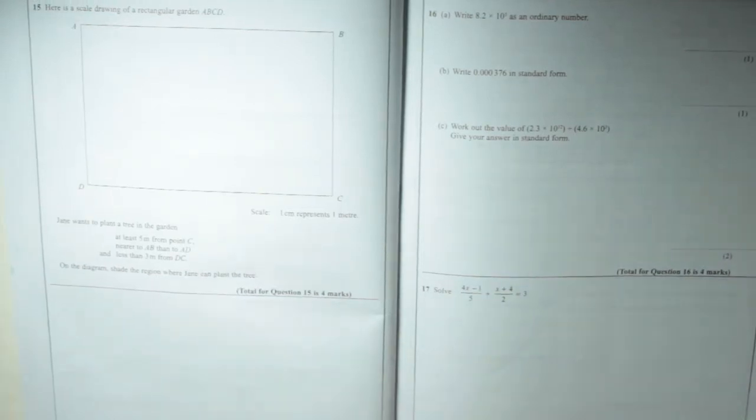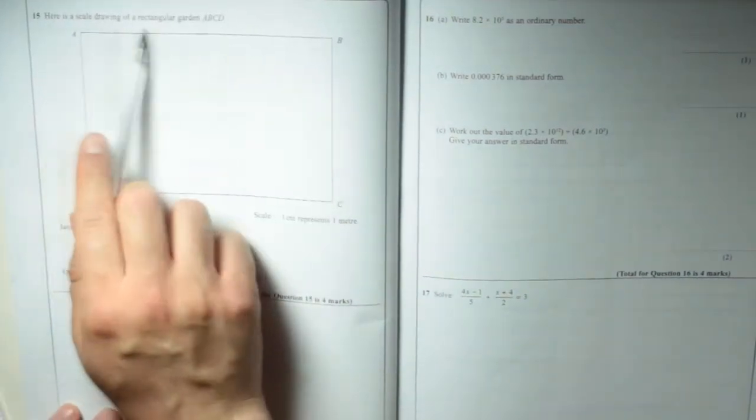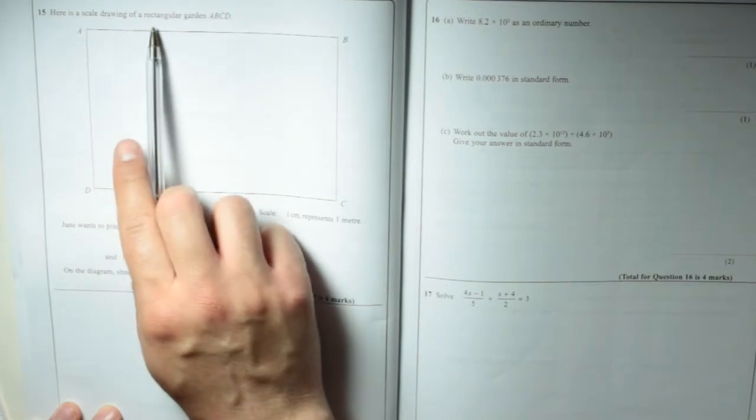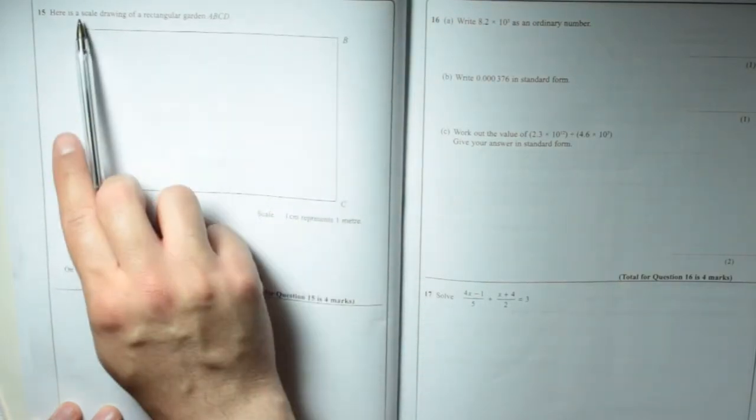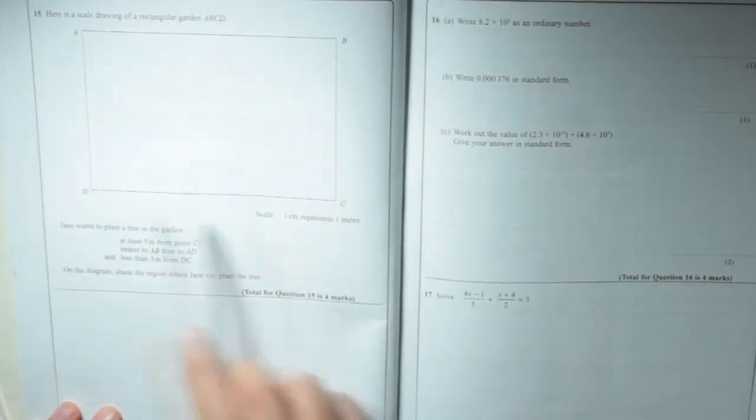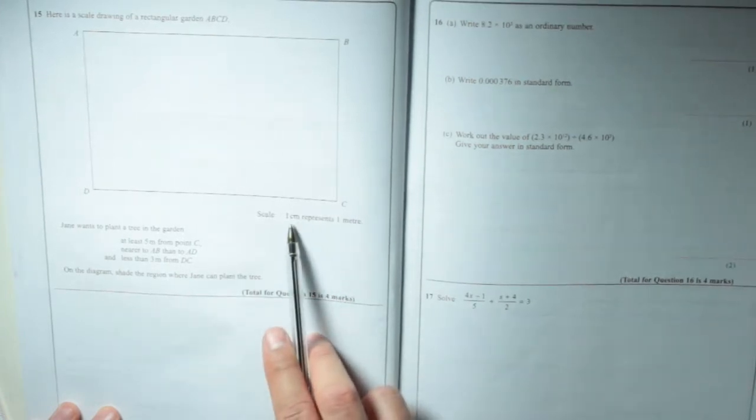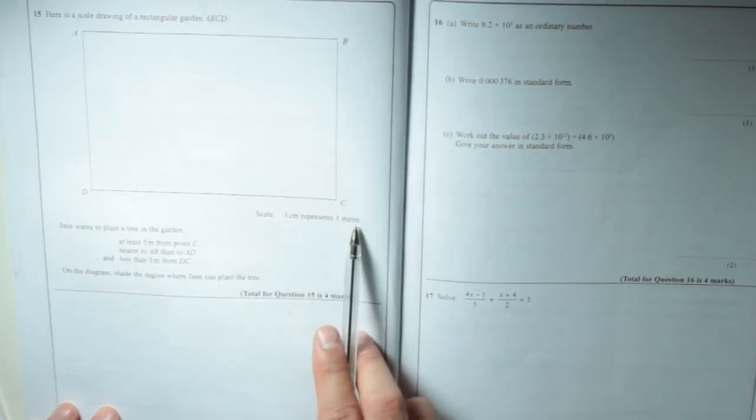Okay, now we have a construction question, question 15. Here is a scale drawing of a rectangular garden ABCD. We have a scale: one centimetre represents one metre.